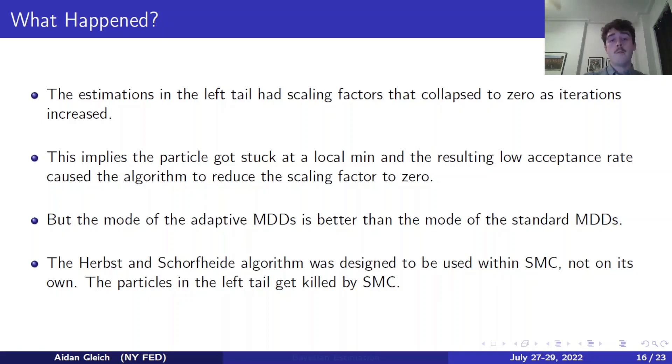So what's going on there? Well, when I investigated those estimations in the left tail, they showed that they had scaling factors that had gone to zero, which implies that the particle had gotten stuck at a local min and the resulting low acceptance rate had caused the algorithm to reduce the scaling factor to zero. The algorithm saw that we had a lower acceptance rate than the target and it thought that was because sigma was too large, when in reality we were stuck at a local min and probably actually wanted a larger sigma in order to get out of that min. So the algorithm got confused and it caused the particle to get stuck. But the mode of the adaptive MDDs is actually better than the mode of the standard MDDs. And this is what makes the Herbst and Schorfheide algorithm attractive for use within SMC. Because although those results show a long left tail, because of the selection step in SMC, SMC is just going to kill those particles that have those sort of outliers that might get stuck, and it will keep using the sort of mode particles which have higher MDDs than you may have gotten out of the standard MH algorithm. So even though you have that long left tail, this algorithm works great within SMC.